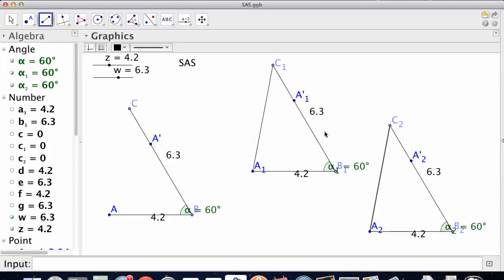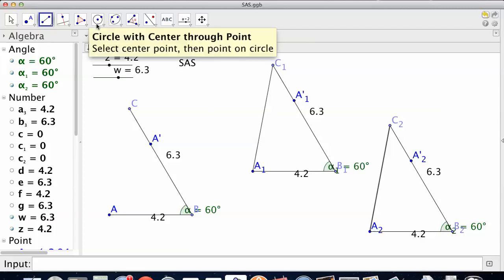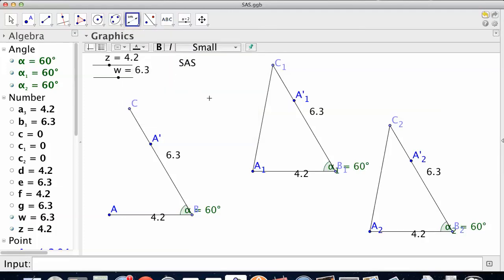4.2, 60, 6.3. 4.2, 60, 6.3. They both have side-angle-side. And now the question is, is that third side the same? 5.4, 5.4, 5.4.